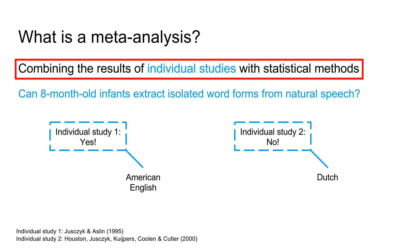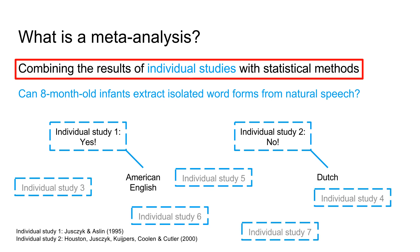One thing meta-analysis can be used for is to look for moderator variables. For instance, in this case, it turns out that study 1 was carried out with American English-learning children in the US, while study 2 was carried out with Dutch-learning children in the Netherlands. Of course, it is hard to say from these two studies alone that infants' native language was the cause for the diverging results. However, putting together all studies on one phenomenon allows us to make better generalizations on the impact of moderator variables.